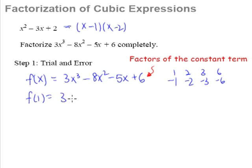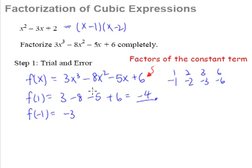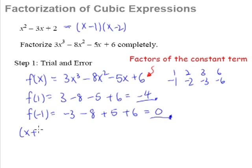We put in x equals 1, and we get 3 minus 8 minus 5 plus 6, which gives us negative 4 — not zero, therefore not a factor. Next, put in x equals negative 1. We get negative 3 minus 8 plus 5 plus 6. This gives negative 11 plus positive 11, which is zero. Yes, we got zero! What this tells us is that x plus 1 is a factor of the cubic equation. This is step number 1 — we have found a factor.